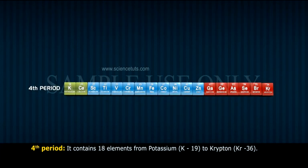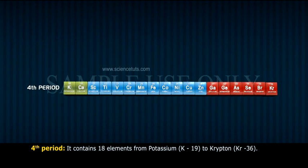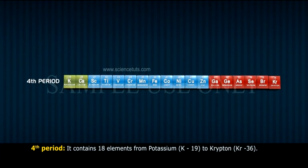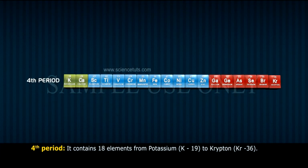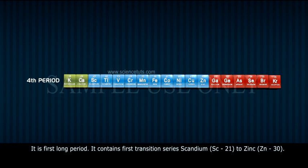The fourth period contains 18 elements from potassium, K-19, to krypton, Kr-36. It is the first long period. It contains the first transition series, from scandium-21 to zinc-30.